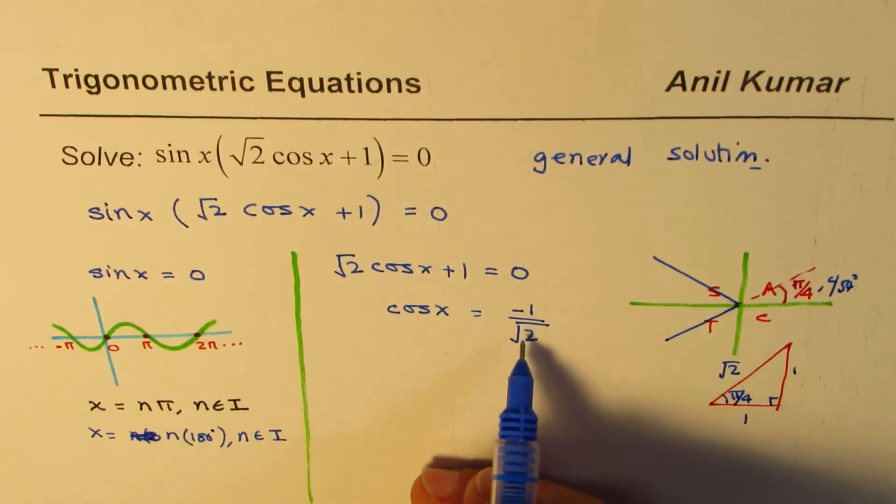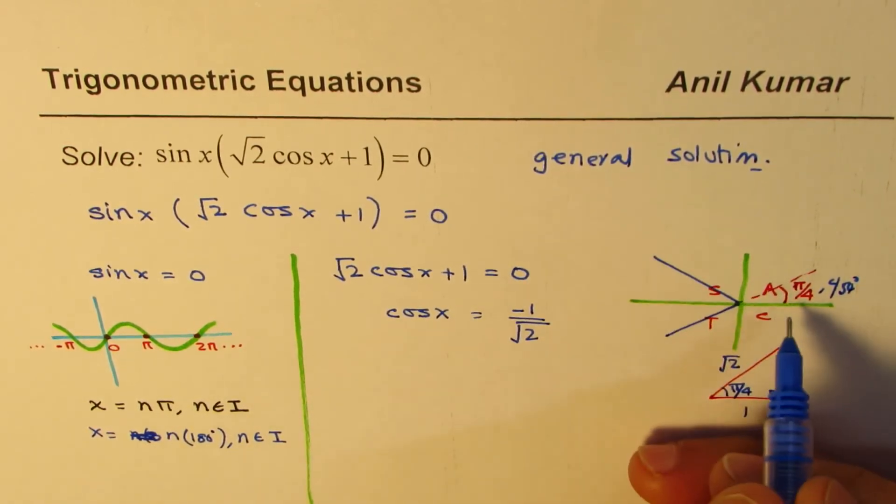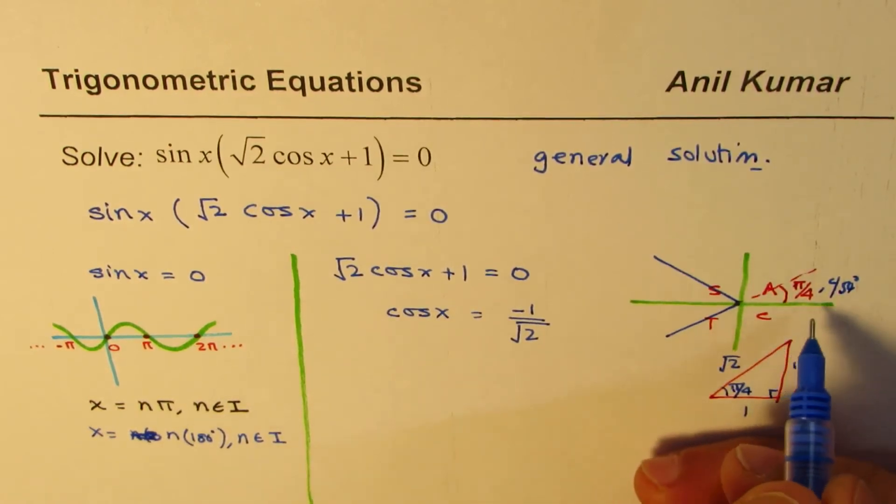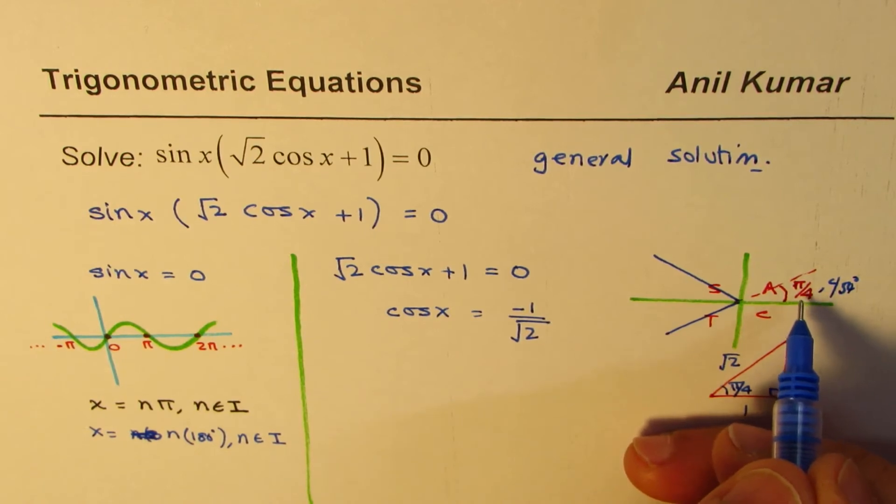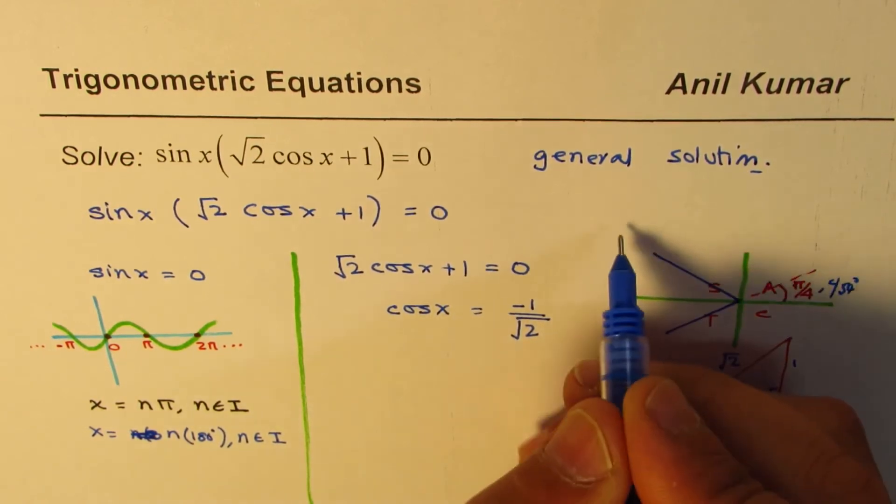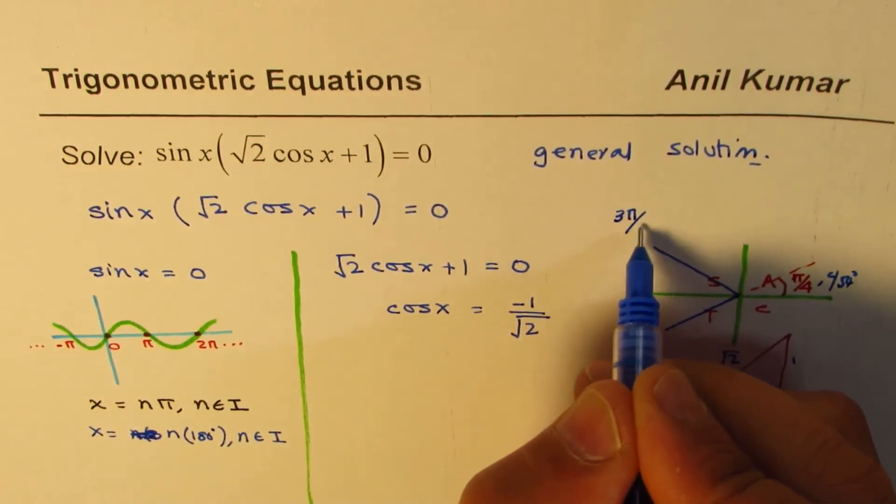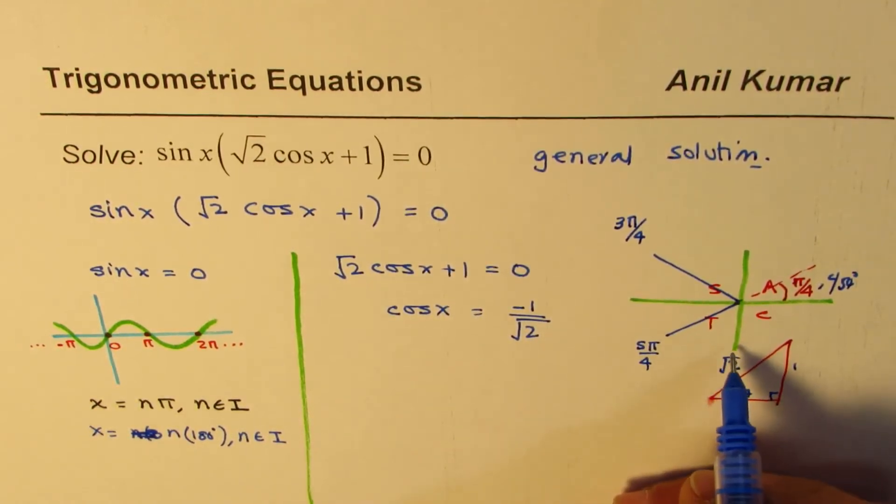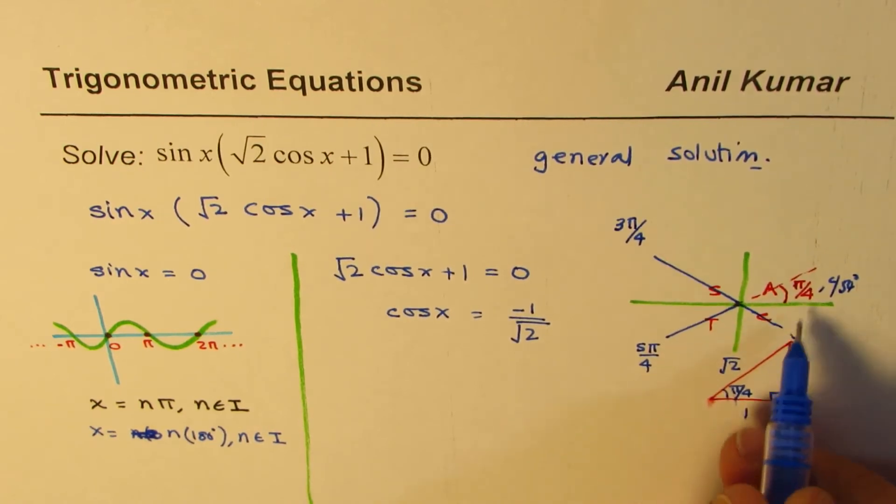Since we're looking for negative value, so one answer is this one, which is in this case pi minus pi by 4, 3 pi by 4. You could write 3 pi by 4. The other one is 5 pi by 4. So we get these solutions for the cos function.